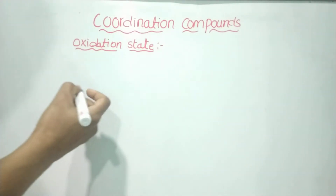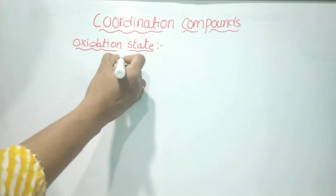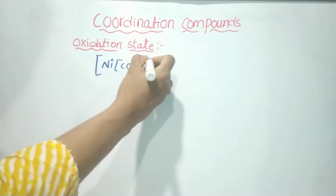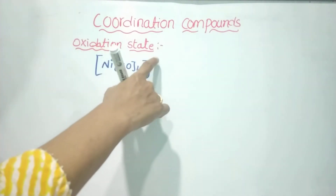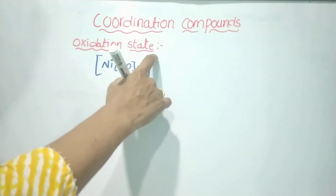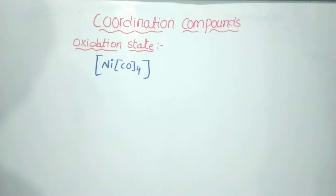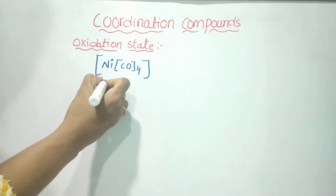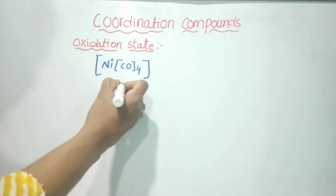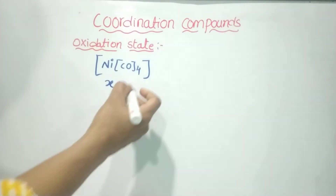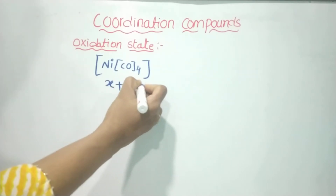When we have a complex, we have a lot of types. For example, we have a compound. If we don't have any charge on this complex, we don't have any counter ions. We will determine the oxidation state of this complex. If we don't know the oxidation state, we call it X. CO is neutral, so it has zero oxidation state.